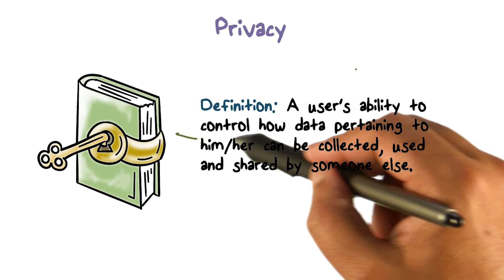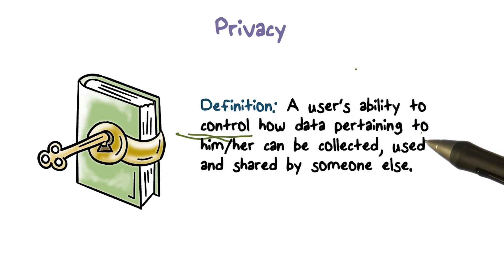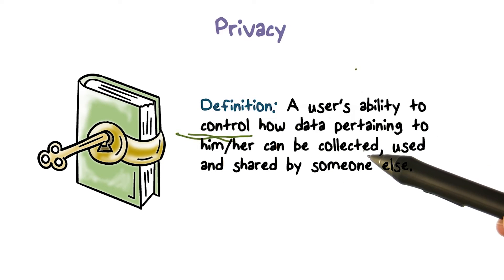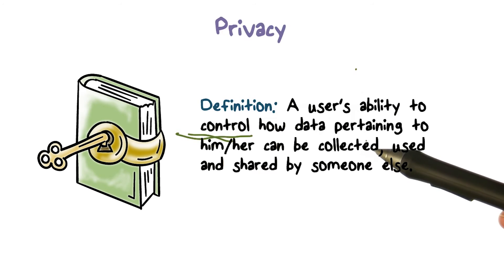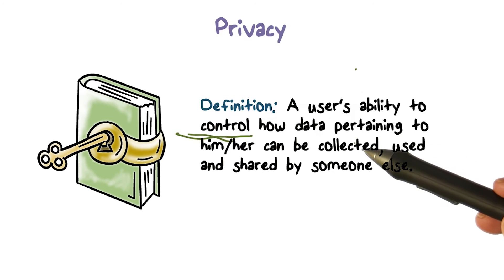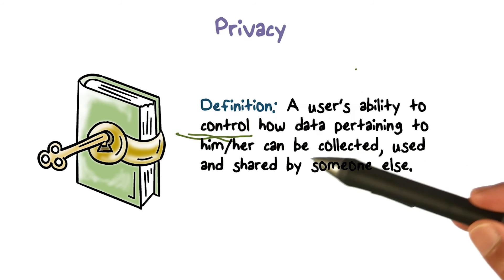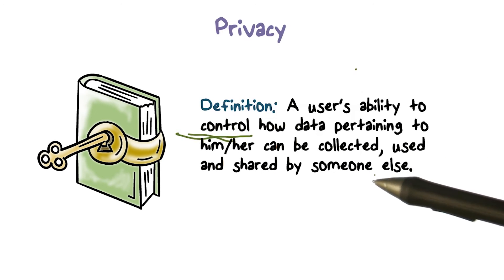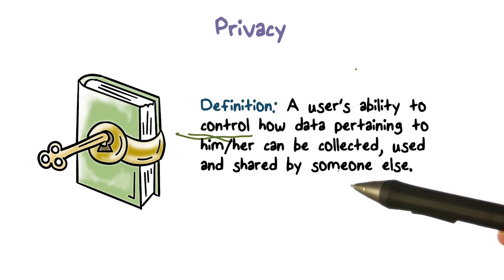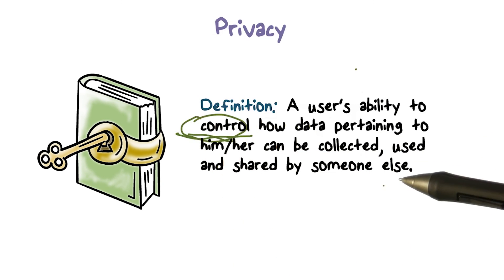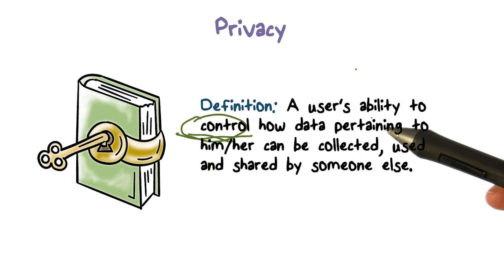The definition basically is a user's ability to control — that's the key thing here, control — how data pertaining to us or our activities can be collected, who can actually collect such data. You visit a website, you send an email, you make a phone call — but who can collect information about these activities? How can this information be used? And can they, the entity that collects it, share it with somebody else — another company, government agency, whatever it is. The focus is on our ability to control all of these. That's what privacy is: our ability to control information about us.